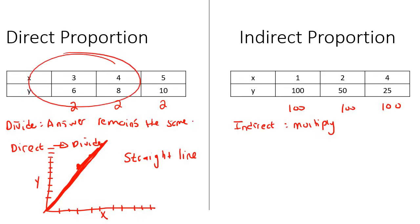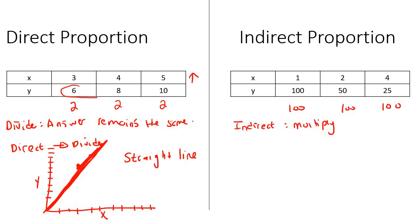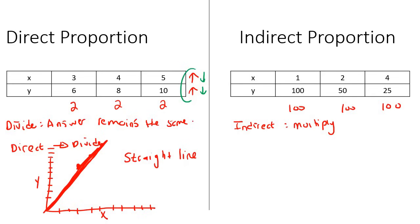But something I forgot to tell you about this one. Can you see what's happening to these numbers? Are they going up or are they going down? They are going up — three goes to four, goes to five. So the numbers are going up. And look at what these numbers are doing — six goes to eight, goes to ten. So these numbers are also going up. So that is what direct proportion does. When the one goes up, the other one goes up. And if the one goes down, then the other one also goes down.